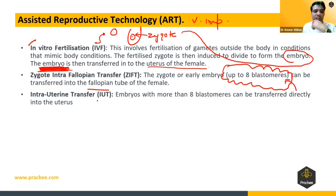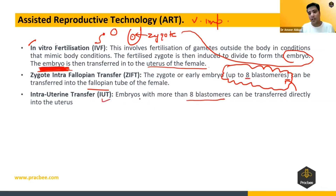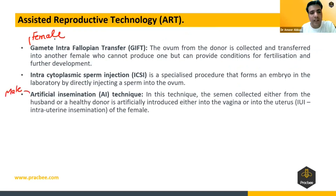In Intrauterine Transfer, we cannot transfer a zygote of up to eight blastomeres into the uterus — it must be more than eight blastomeres. So in intrauterine transfer we transfer the embryo with more than eight blastomeres. GIFT is for the female and artificial insemination is for the male.